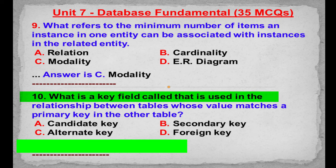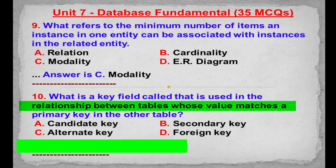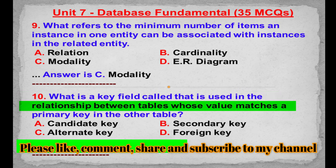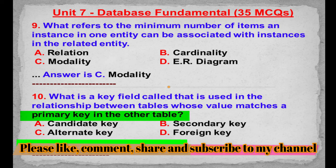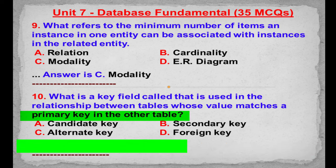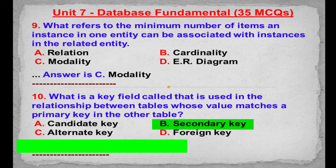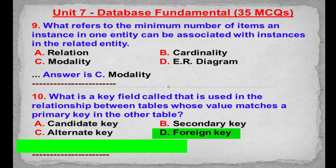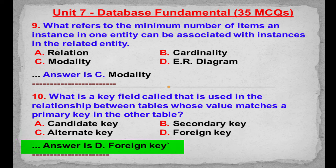MCQ number 10: What is a key field called that is used in the relationship between tables, whose value matches a primary key in the other table? Option A: Candidate key. Option B: Secondary key. Option C: Alternate key. Option D: Foreign key. Correct answer is Option D: Foreign key.